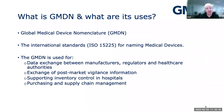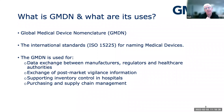GMDN is used primarily to exchange data between manufacturers, regulators, and health authorities or hospitals. It's also used to track problems or opportunities when using medical devices — what we call vigilance — and to support inventory control, so you know how much of a certain type of product is available, and to support the purchasing process to identify the type of product you're looking for.